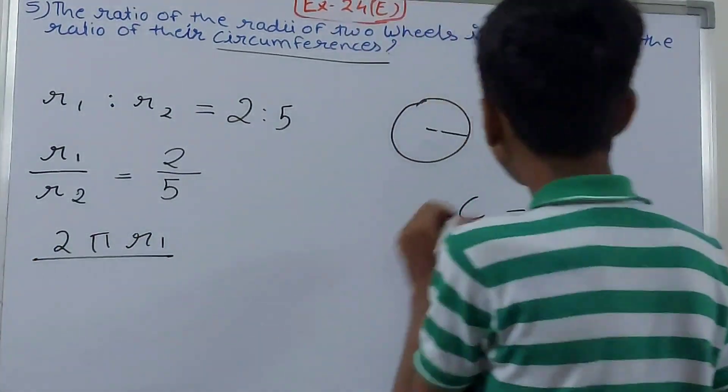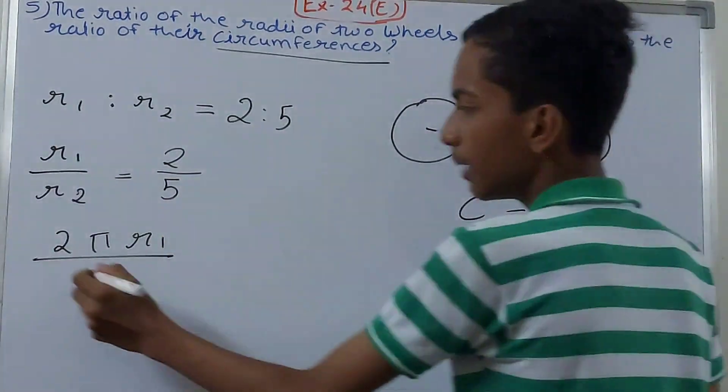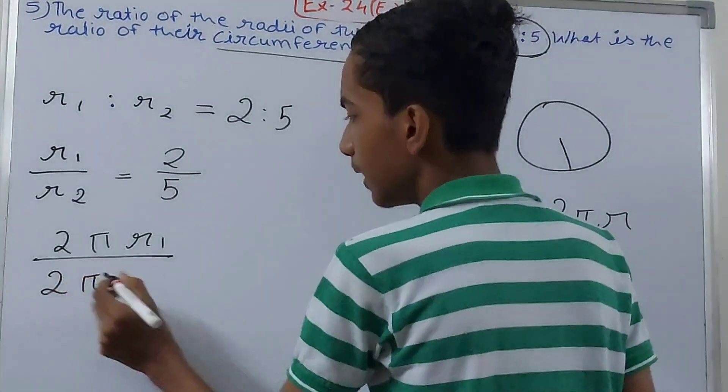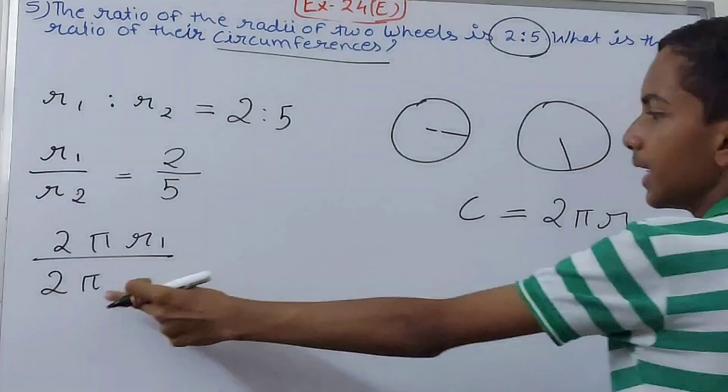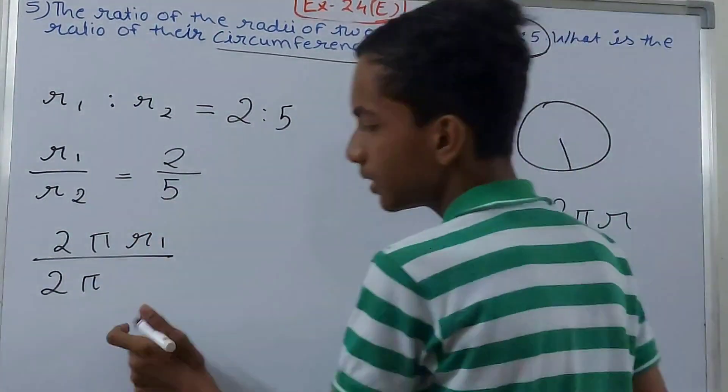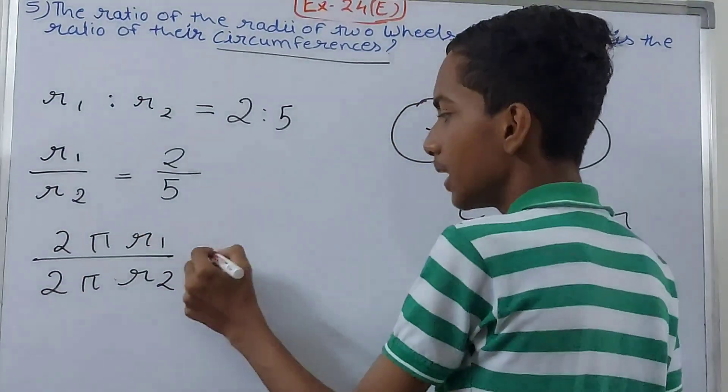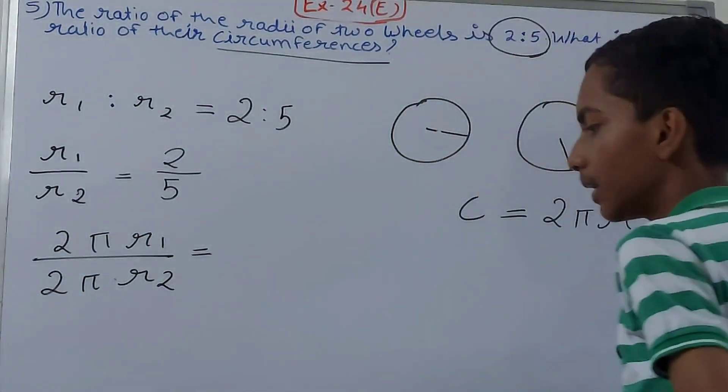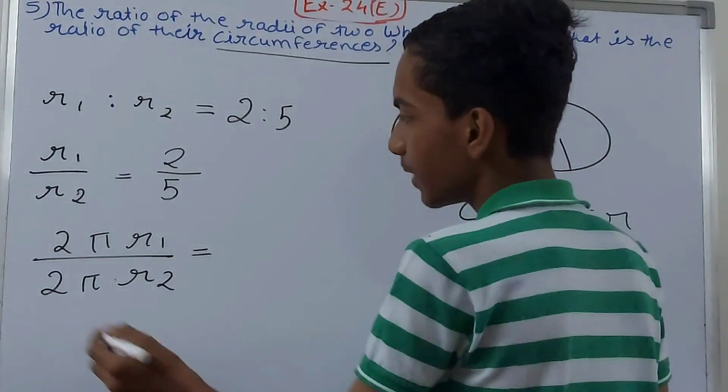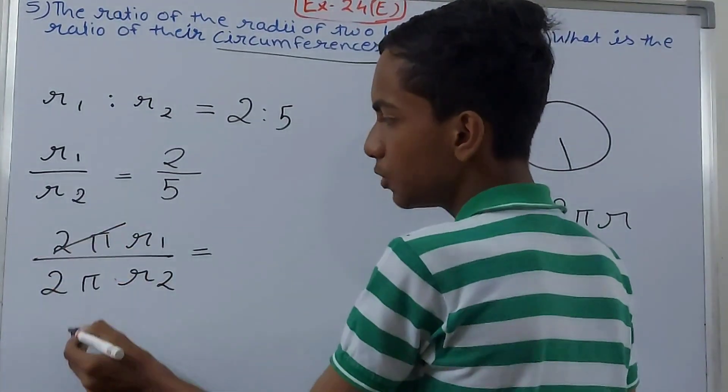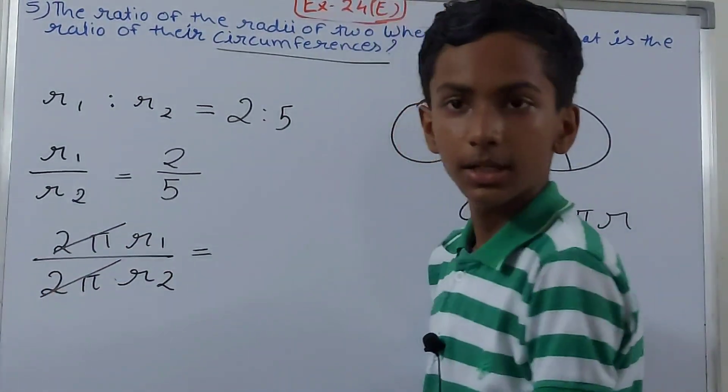Same we will do for the second radius. Put this 2π again, and then radius is r2 this time. So this becomes another circumference.